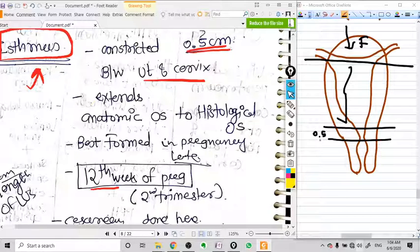Isthmus is not visible in non-pregnant uterus. When the uterus becomes pregnant and in the later part of pregnancy when labor develops, then you can identify the isthmus part of the uterus that is stretchable.